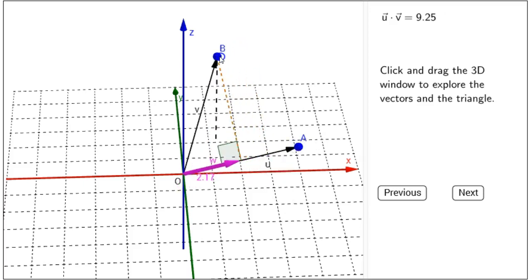As I change the vectors, we can also notice that the dot product is given at the top of the screen. So, for example, right now, as the vectors are located, I have U dot V equals 8.44.